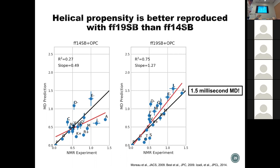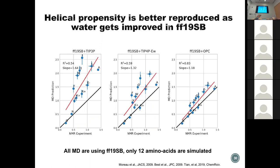To generate that helical propensity plot we needed to run 1.5 millisecond MD simulations, not replica exchange — just straight MD. We also tested 19SB with other water models: 19SB with TIP3P gives R²=0.5, 19SB with TIP4P-EW gives R²=0.6 with slope 1.3, and 19SB with OPC gives the best correlation. This means that as water models improve from TIP3P to TIP4P to OPC in reproducing bulk properties, 19SB correlation improves correspondingly — 19SB can actually serve as a probe to test water model quality.